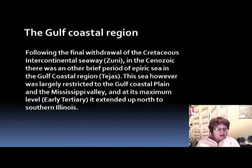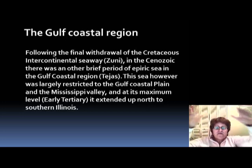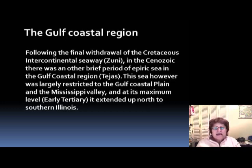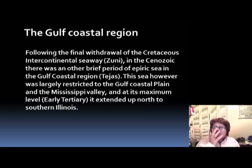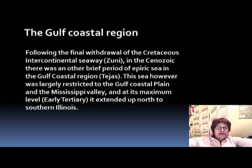Now let's go region by region, starting with the Gulf Coastal region. After the final withdrawal of the Cretaceous Zuni Sea, there was another brief period of transgression in the Cenozoic — another epeiric sea called the Tejas Sequence. This seaway was restricted to the Gulf Coast Plain and the Mississippi Valley. At its maximum level in the early Tertiary, it extended all the way up to southern Illinois. The seaway was periodic, moving up and down cyclically, with the Rocky Mountains to the west and the Appalachians to the east supplying sediment.